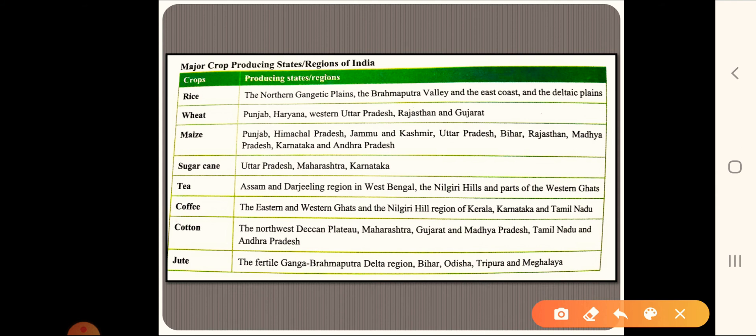Like rice can be grown in the North Gangetic Plains, the Brahmaputra valleys, and the east coastal plains. Likewise, wheat can be grown, you can learn Rajasthan, Punjab, Haryana. So two to three names is well sufficient.